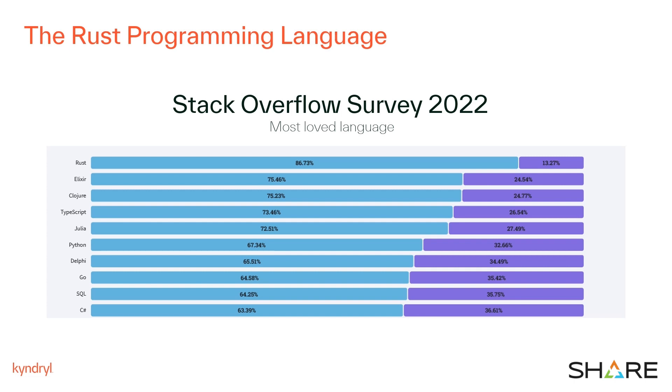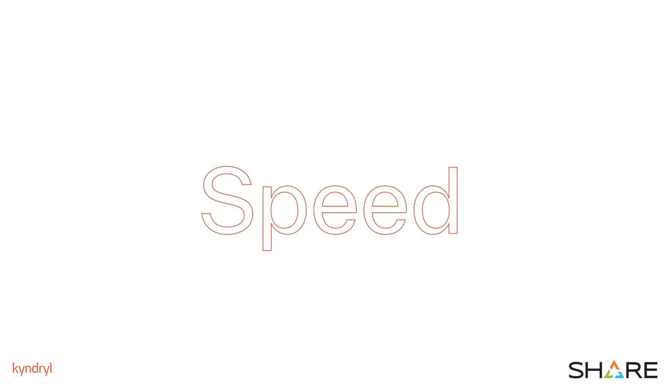87% of developers say that they want to continue using it. But why is that? To answer this question, we will need to dive a little bit deeper into the Rust programming language. The first reason for Rust's success is because it is extremely fast — almost as fast as C, and in fact it often compiles to the exact same assembly code.